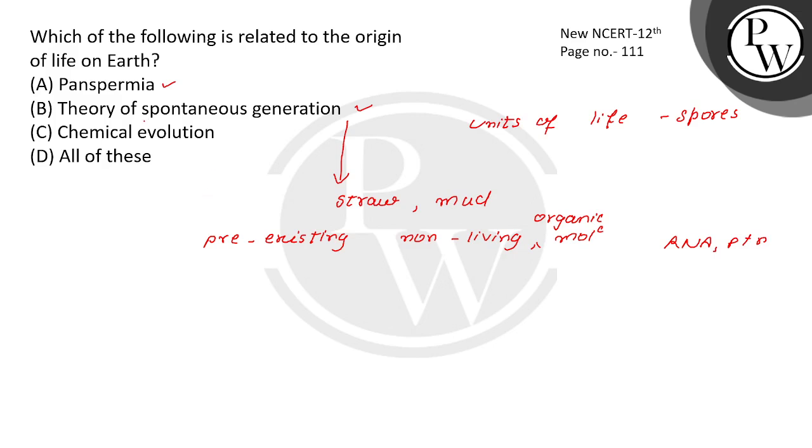The theory of spontaneous generation says that life spontaneously evolved from non-living matter - rotting, decaying matter like straw and mud.